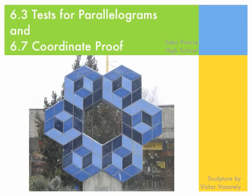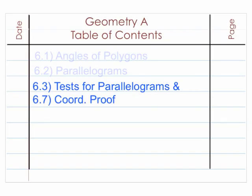Section 6.3 is all about tests for parallelograms, and we'll combine that a little bit with 6.7, which is all about coordinate proof. So first, prepare your notes. For your table of contents, we have kind of like two sections here, 6.3 and 6.7.